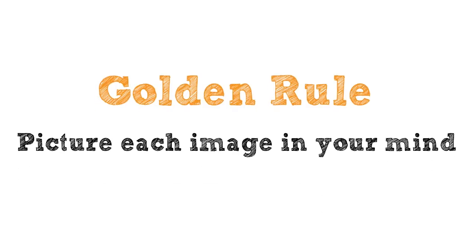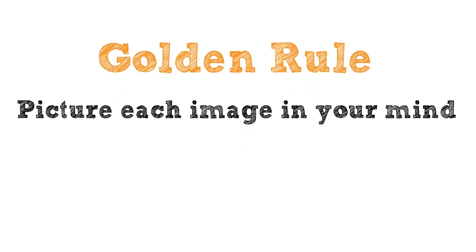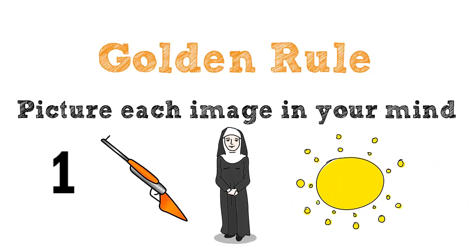Instead of visualizing a number, you'll imagine an object that rhymes with a particular number. To remember the number one, you could create a mental image of a gun or a nun or the sun. None of the digits from zero to nine rhyme with each other, so you won't get confused. Let's get into it and you'll see how simple it is. Focus on imagining each picture in your mind and you'll be amazed how easily you can recall everything.